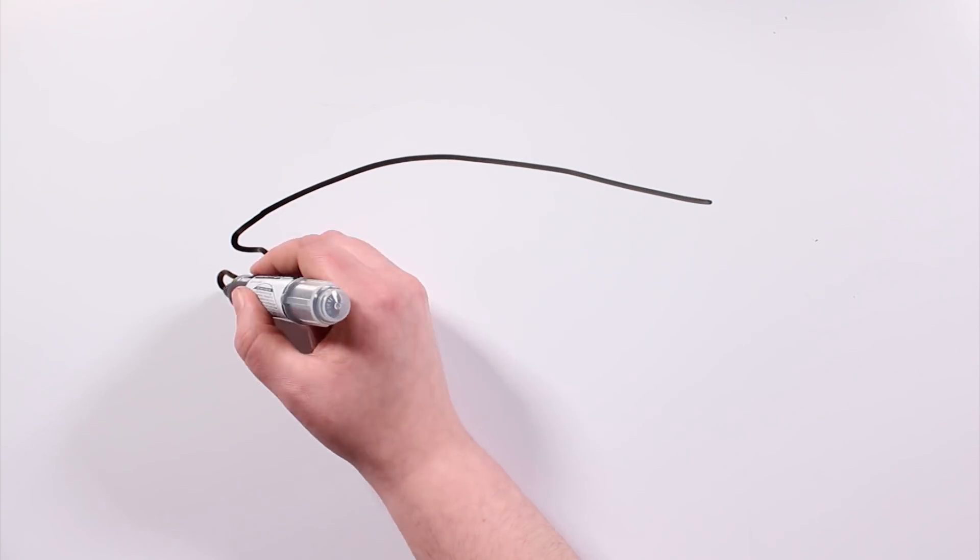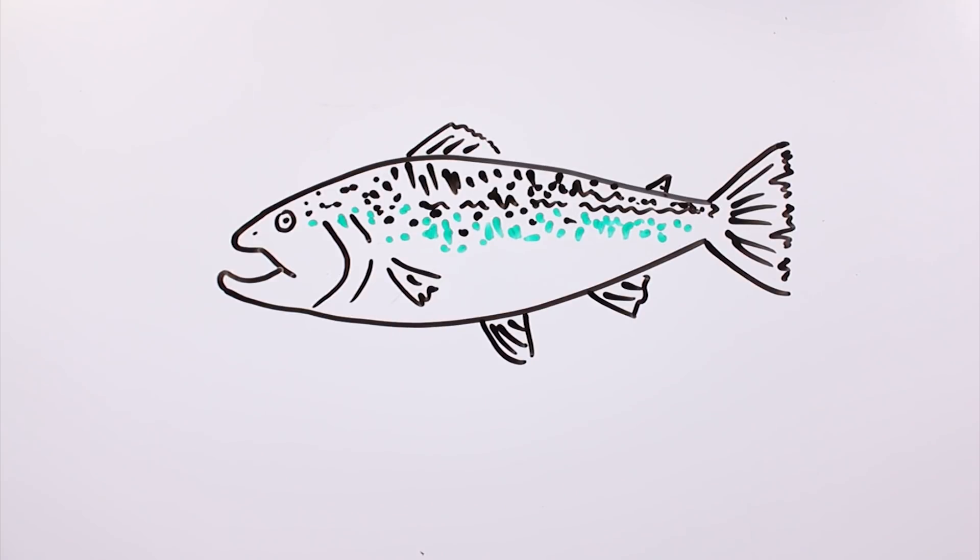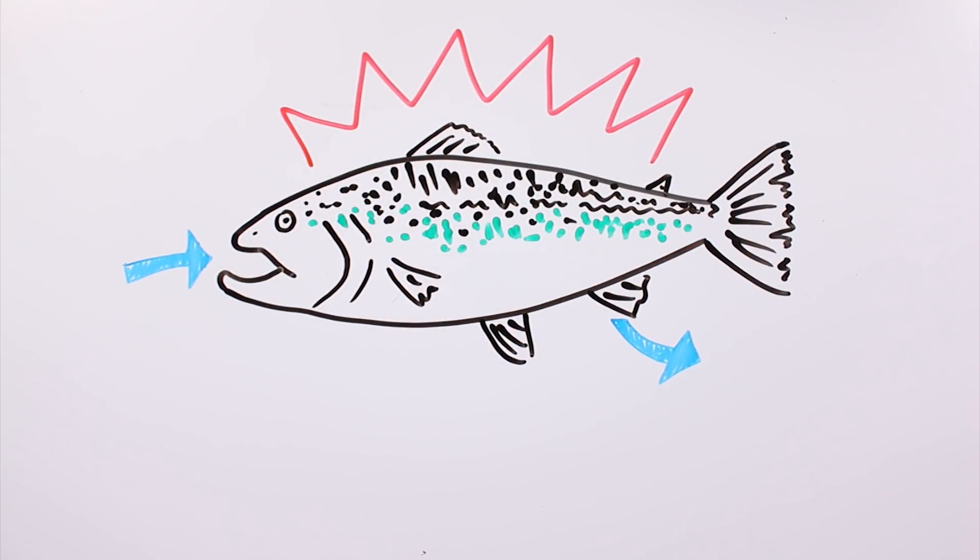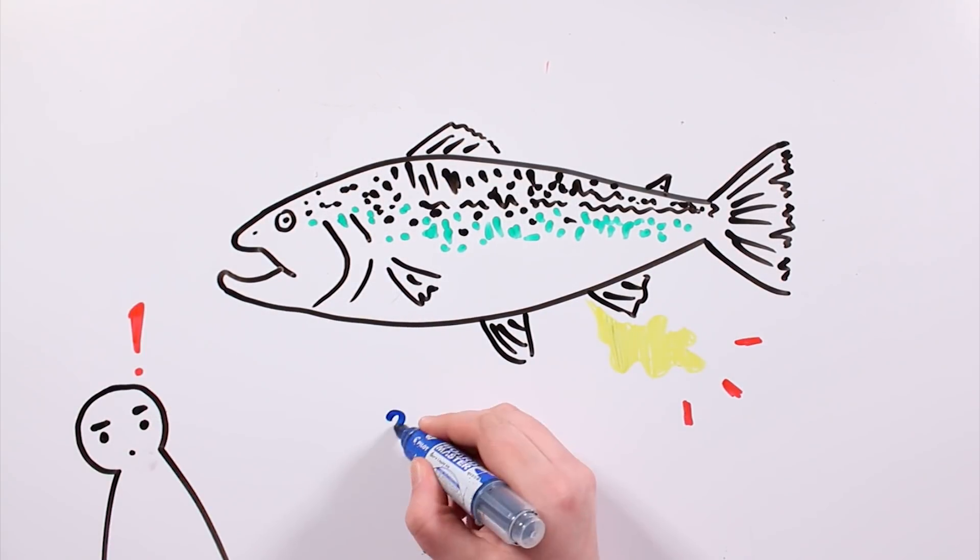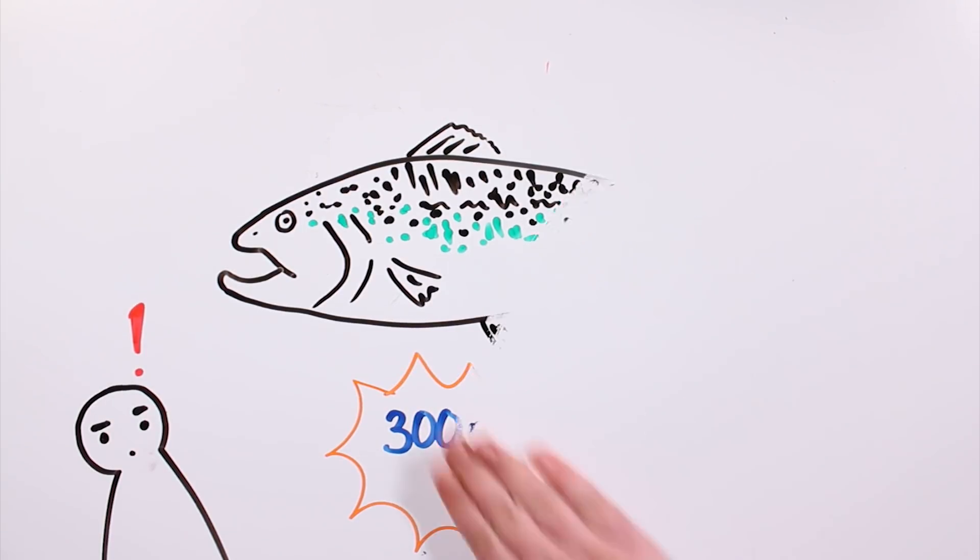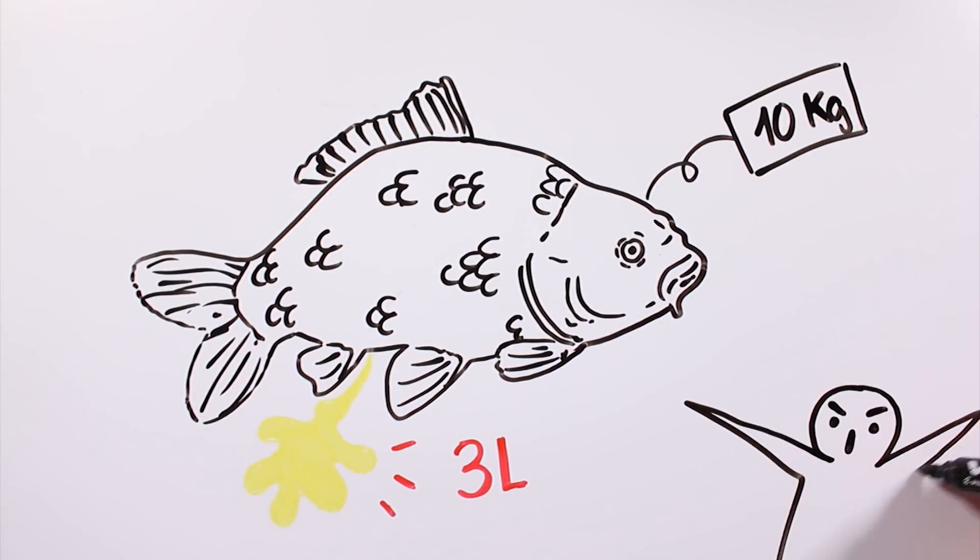In order not to explode, freshwater fish tend to expel water constantly, non-stop. These fish spend all day urinating. For instance, on average, a freshwater fish urinates daily 300 milliliters for every kilogram they weigh. This means 3 liters of urine per day for a 10 kilo carp. They have a weak bladder.